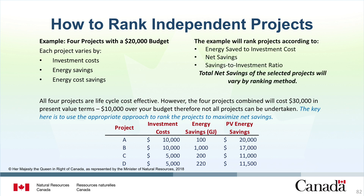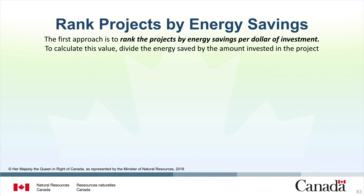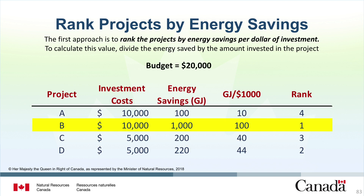We will consider three approaches. The first approach is to rank the projects by energy savings per dollar of investment. To calculate this value, divide the energy saved by the amount invested for all four projects. Project A has an investment cost of $10,000 and energy savings of 100 gigajoules — that is 10 gigajoules saved per $1,000 invested, or 0.01 gigajoules per dollar invested. Project B has an investment cost of $10,000 and energy savings of 1,000 gigajoules — 100 gigajoules saved per $1,000 invested, or 0.1 gigajoules per dollar. In this approach, Project B has the greatest amount of saved energy per dollar invested, followed by D, C, and then A.